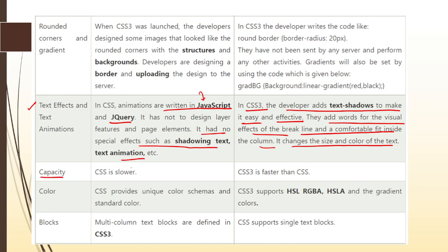Next is capabilities. CSS is slower compared to CSS3. As mentioned, every latest version is more attractive and interactive than the previous one, so the capabilities of CSS are slower than CSS3. The next property is color. CSS provides unique color schemas and standard colors, but CSS3 supports HSL, RGBA, HSLA, and gradient colors — these are the current features that everyone wants to use in their webpage.